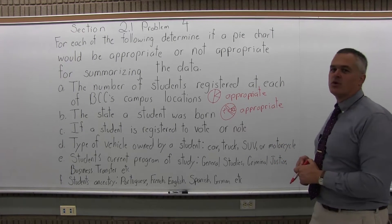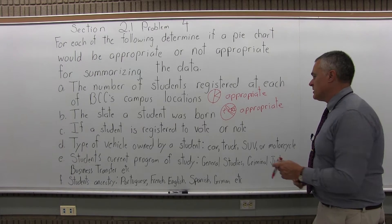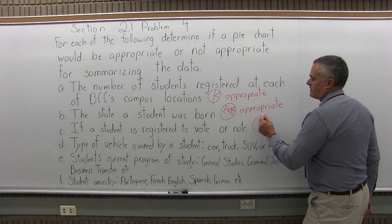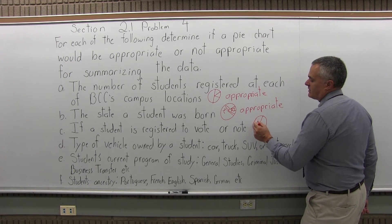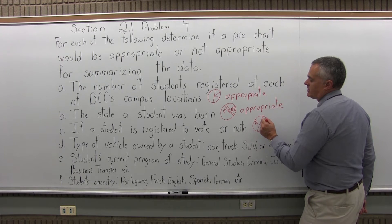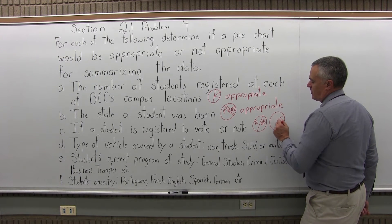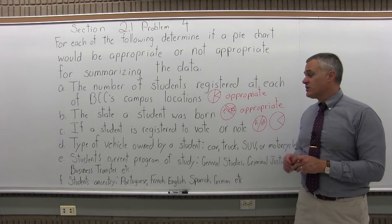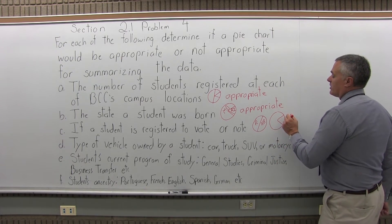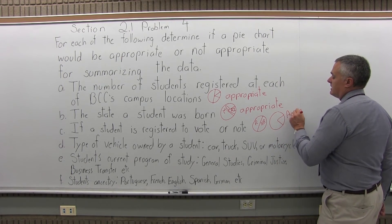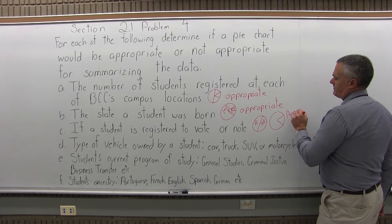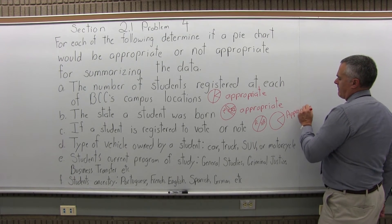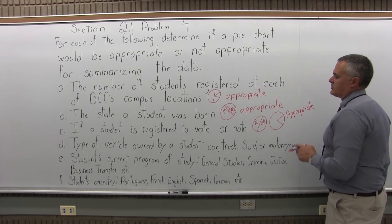Part C: if a student is registered to vote or not. Yes, that would be appropriate. In theory it might be half and half — registered, not registered. It might be more not registered than registered, or hopefully the other way around. But bottom line, it would make a good pie chart, and the pie chart would be appropriate for measuring that.